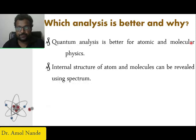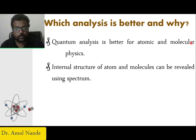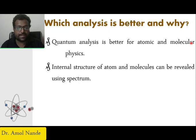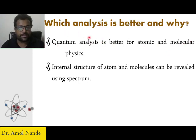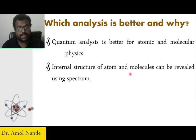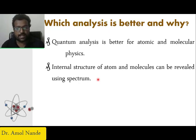The basic question is: which analysis is better and why? Can you explain molecular and atomic spectra using classical mechanics? The clear-cut answer is no. You need to study quantum mechanics for better understanding of atomic and molecular physics. What you need is quantum analysis. You are already aware about quantum analysis, so how it can be applicable to atomic and molecular physics, we will see. The internal structure of atom and molecule can be revealed using spectra. We know that the electron jumps from ground state to excited state — the color, the transition, the electron structure.